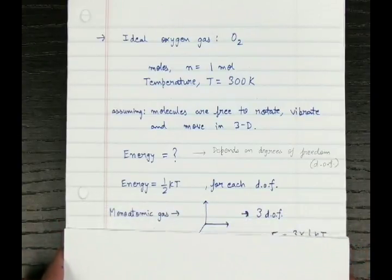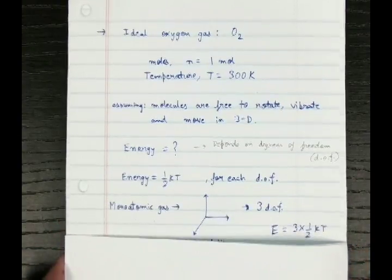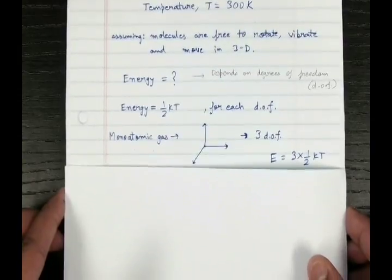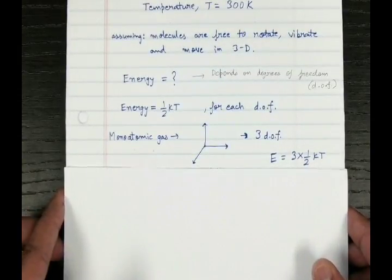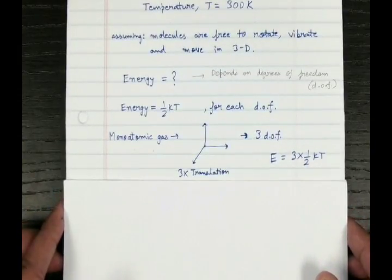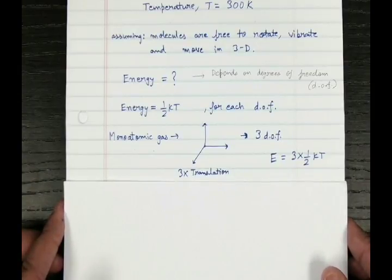So let's say we have a monatomic gas, that is a gas with a single atom. The degree of freedom will be three, corresponding to the three translational degrees of motion. So for three degrees of freedom, the energy for a monatomic gas will be 3 times half KT.